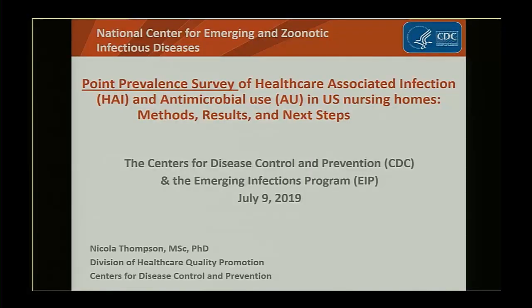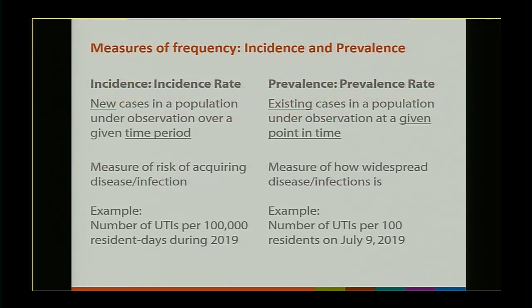This is a point prevalence survey of healthcare-associated infections and antimicrobial use in U.S. nursing homes. This was really a project to help collect data on HAIs and antimicrobial use to support and supplement what we already know from NHSN. As a reminder, there are different measures of disease frequency. Incidence rates give us a measure of new cases or new infections in a population over a given time period — really about the risk of acquiring a new infection.